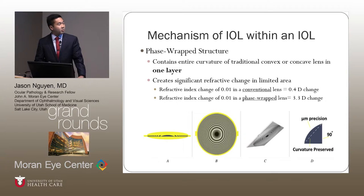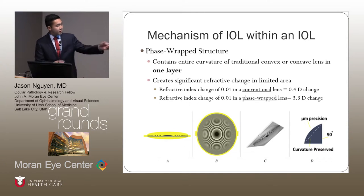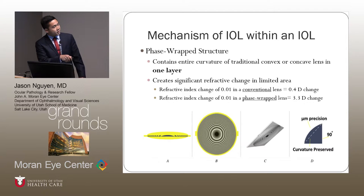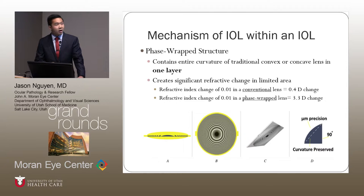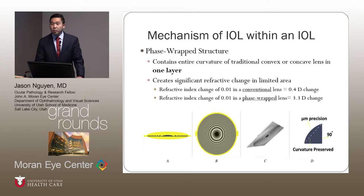What's unique about the phase-wrap structure is that by utilizing this technique, you can contain the entire curvature of a convex or a concave lens in one layer — as you can see in the figure with a side view, top view, and 3D view showing how thin it is. This is important because when you make this IOL within an IOL, you only have about 200 micrometers of space to work with. You're able to have a very significant refractive change in a very small area. With a refractive index change of 0.01 in a conventional lens, you only have about 0.4 diopters change; but with the same index change in a phase-wrapped lens, you have up to 3.3 diopters change.